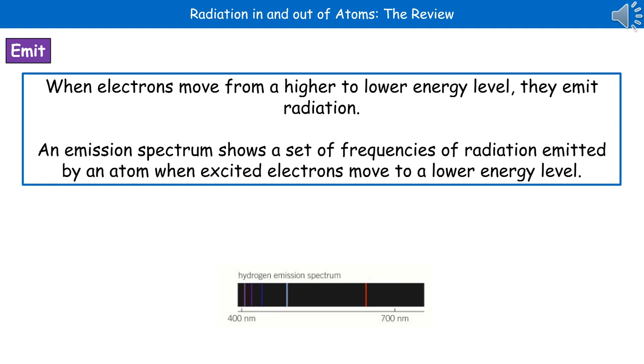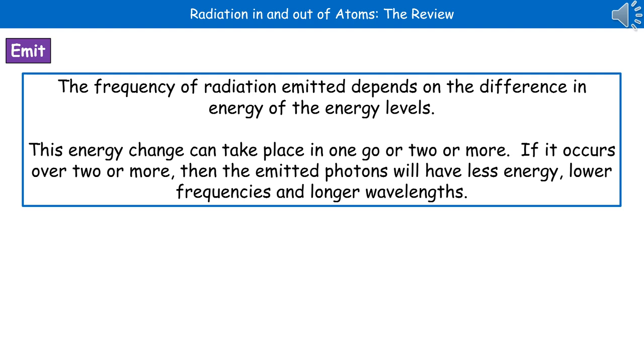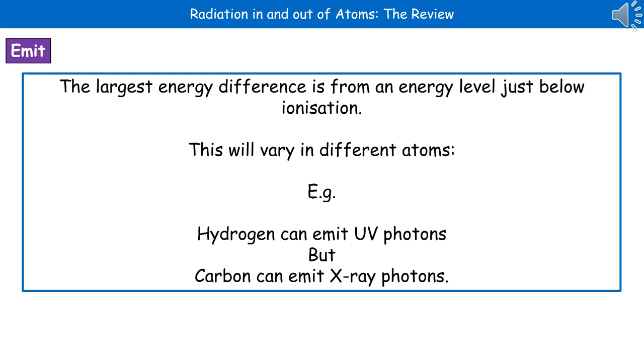The different colored bands are the spectrum emission lines that show the radiation being emitted as the electrons are moving from their higher energy level to the lower energy level. The actual frequency of radiation emitted depends on the difference in energy of the energy levels the electrons are moving between. This energy change can take place in one go or in two or more stages. If it occurs over two or more stages, the emitted photons have less energy, lower frequencies and longer wavelengths.